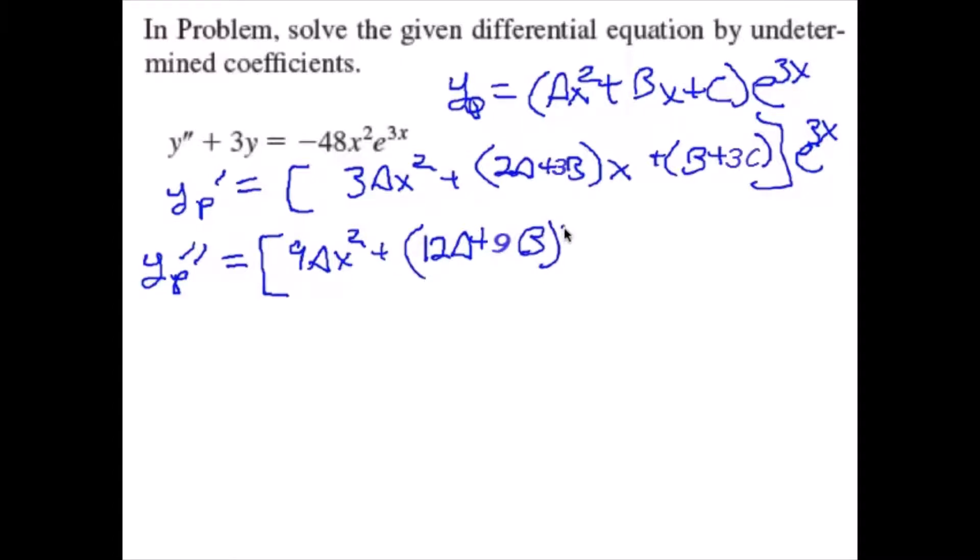times x plus 2A plus 6B plus 9C, and that's all multiplied by e to the 3x.